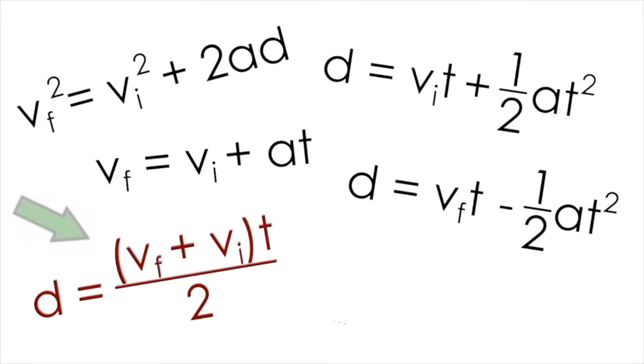Take, for example, this equation. Notice that acceleration is not part of this equation. So it makes sense that if you encounter a problem where acceleration is not given, you would use this equation, as it's actually the only one of the five that doesn't have acceleration in it. Let's look at how we can develop this equation.